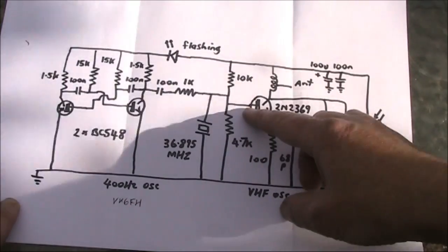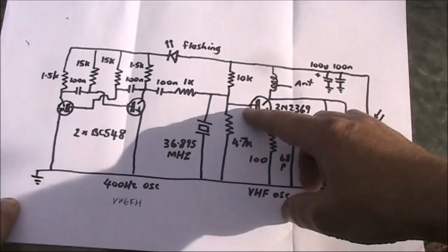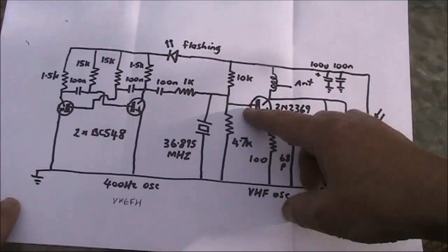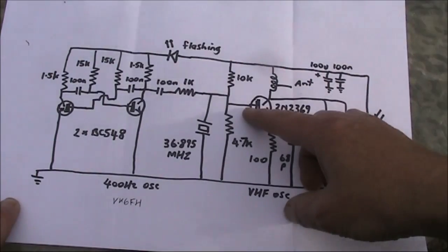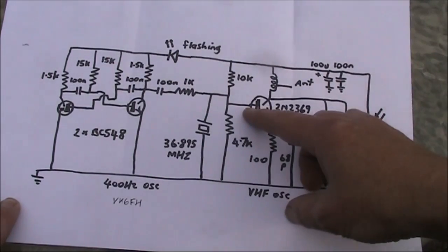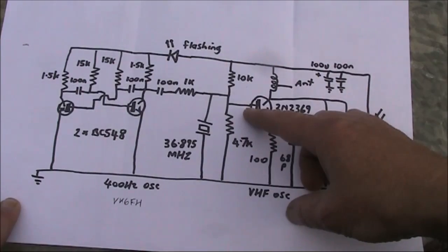Or, if on an SSB receiver, it gives a small amount of frequency shift keying. That allows the beacon to be better identified against other noises on the band.